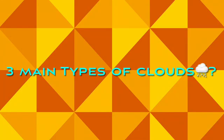Clouds come in many different shapes, sizes, and colors. But there are three main kinds of clouds. What are the three main types of clouds? They are: number one, Cirrus cloud; number two, Stratus cloud; number three, Cumulus cloud.